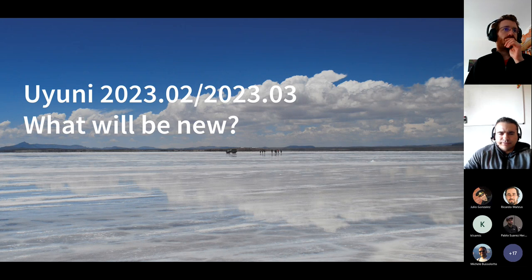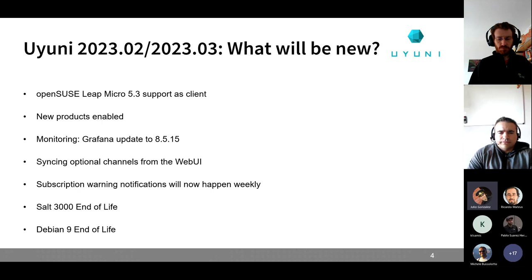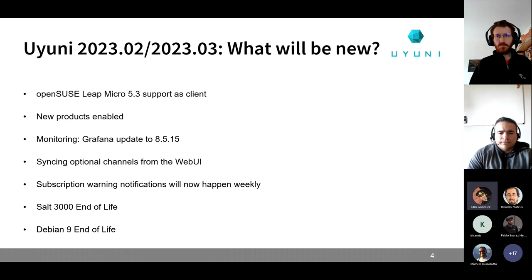It is still not clear if we are going to be able to release the Uyuni version in February. If that is not possible, we will release it as soon as possible in the first days of March. In any case, what is going to be new: openSUSE Micro 5.3 is going to be supported as a client, which is part of the presentation Raul and I will do later. We are enabling new products — openSUSE Leap 15.5 and SUSE Linux Enterprise 15 SP5. Both products are still beta, so not ready for production, but you can already try them on Uyuni.